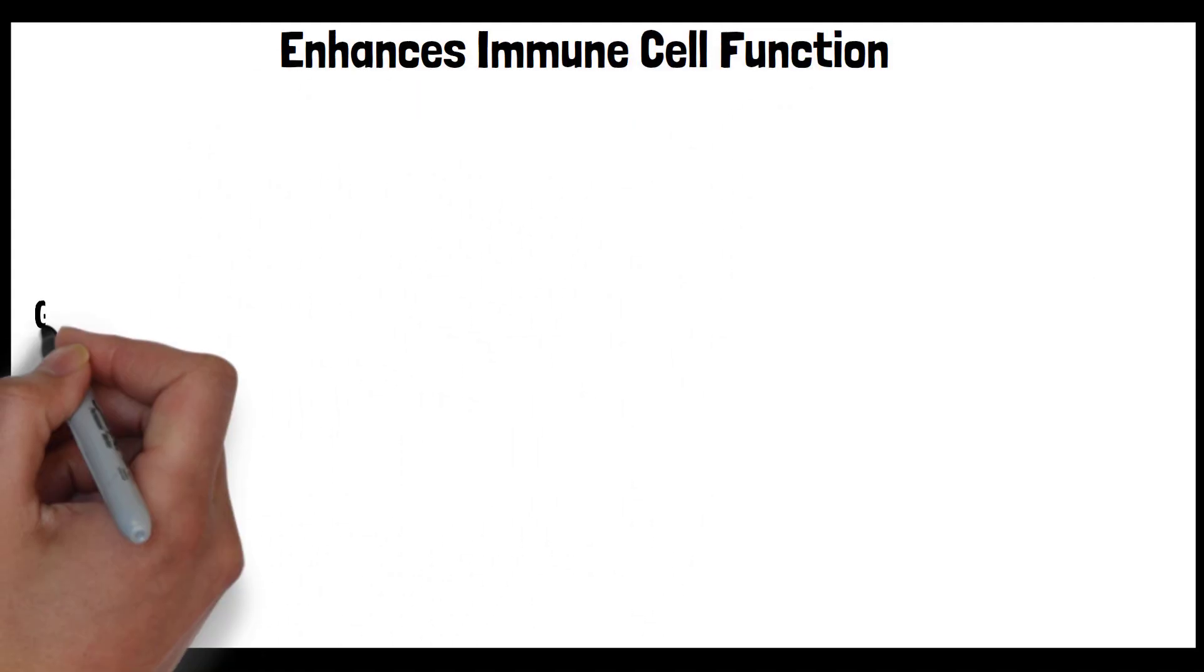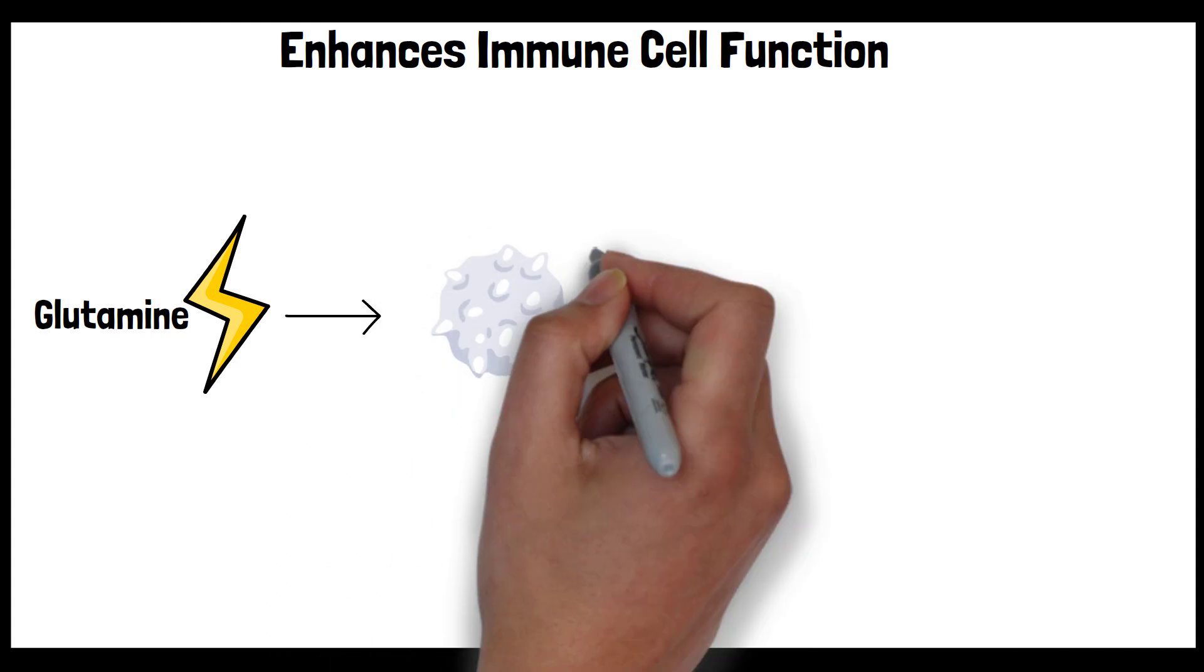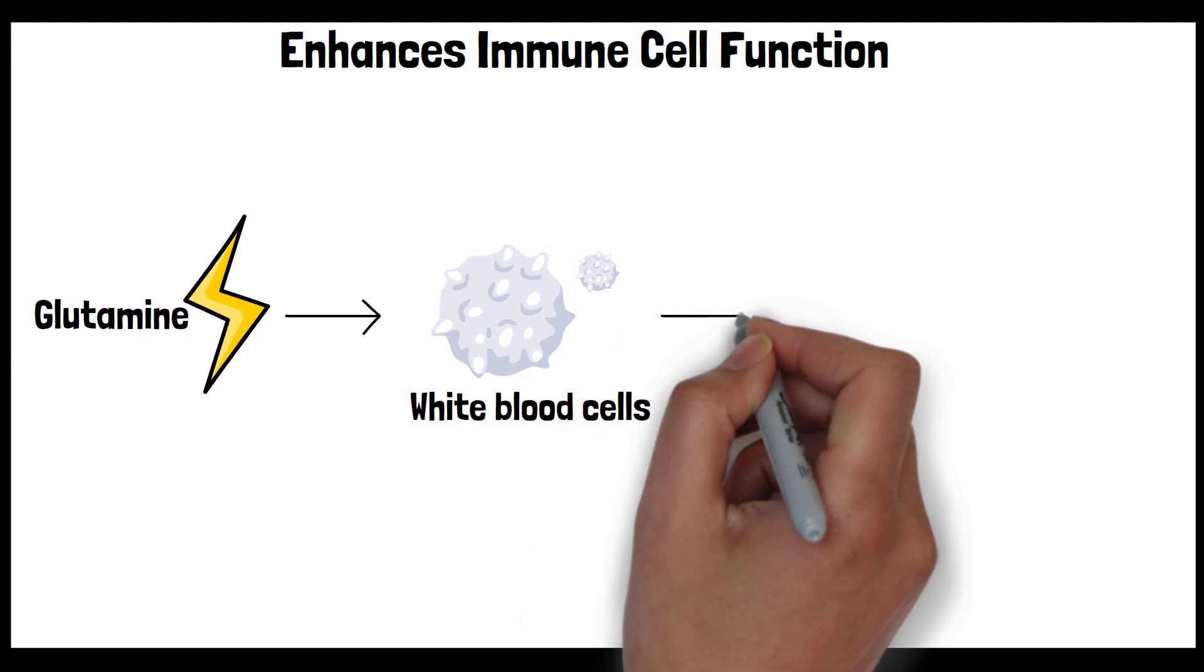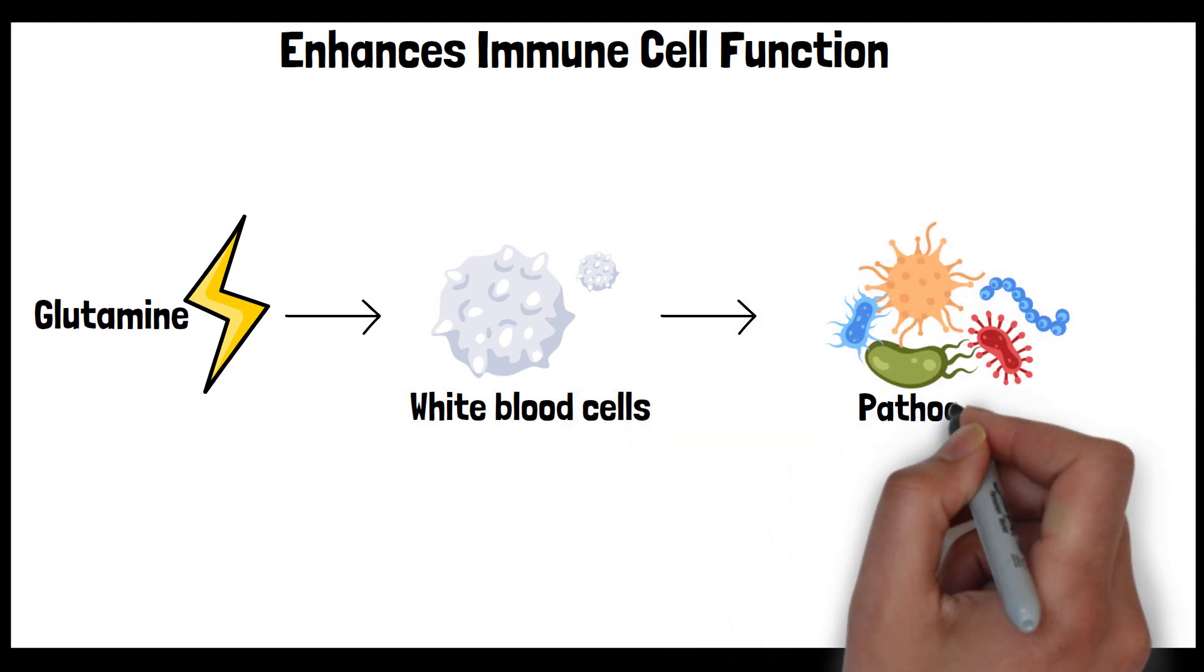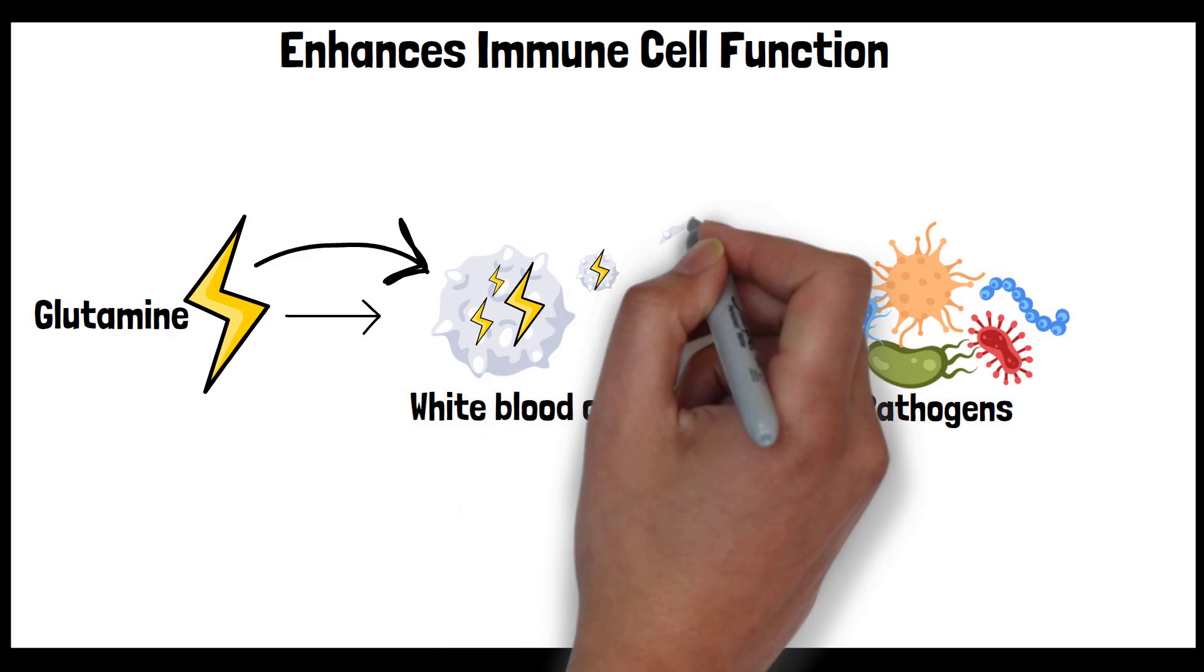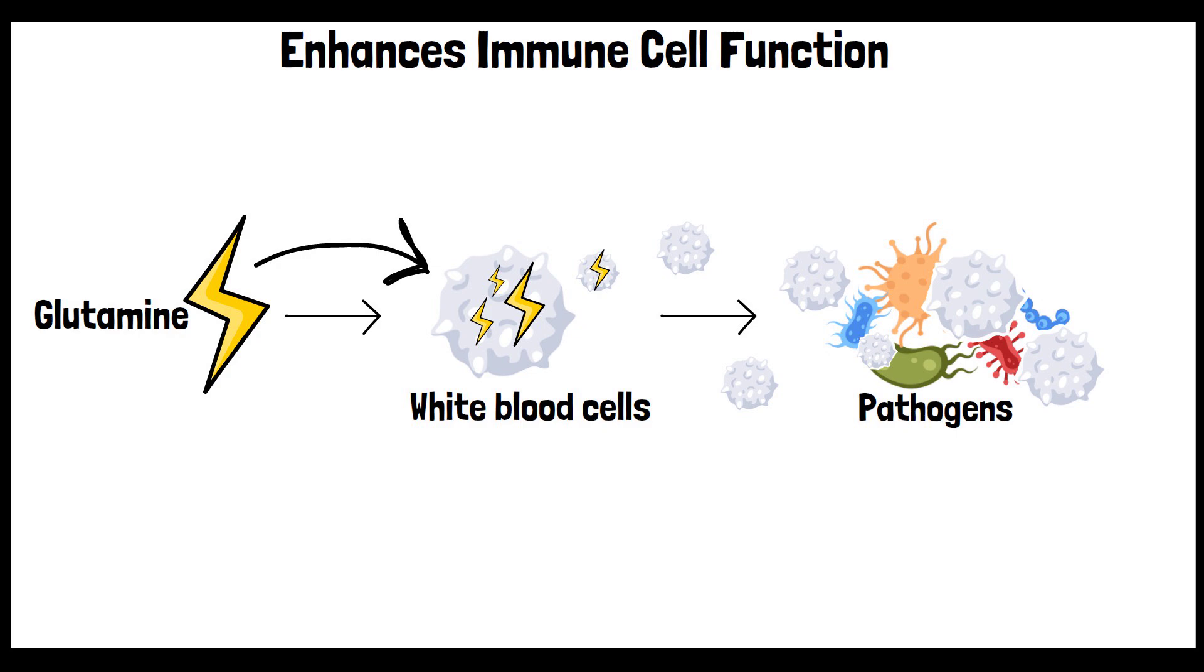One, enhances immune cell function. Glutamine is a key source of energy for immune cells, particularly white blood cells. During illness or stress, these cells are in high demand to fight off pathogens. Glutamine provides them with the necessary energy boost, enabling them to multiply, circulate through the body effectively, and mount a strong defense against infections and diseases.